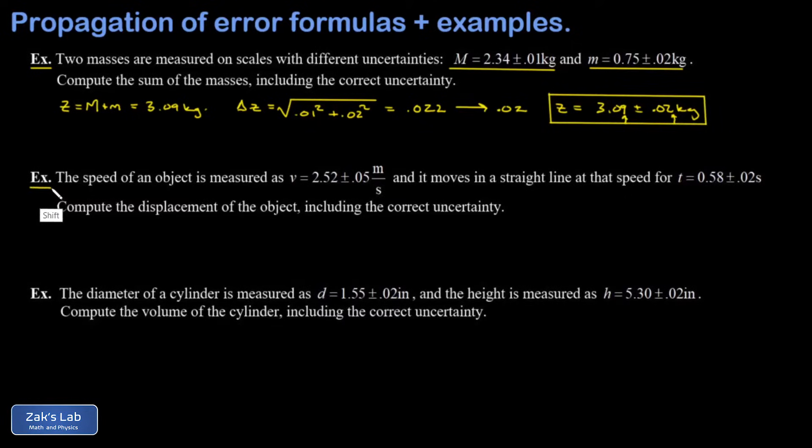In the next example, we're told that the speed of an object is measured as 2.52 plus 0.05 meters per second. And it moves in a straight line at that speed. In other words, we have a constant velocity. And that lasts for 0.58 plus or minus 0.02 seconds. We want the displacement of the object, including the correct uncertainty.